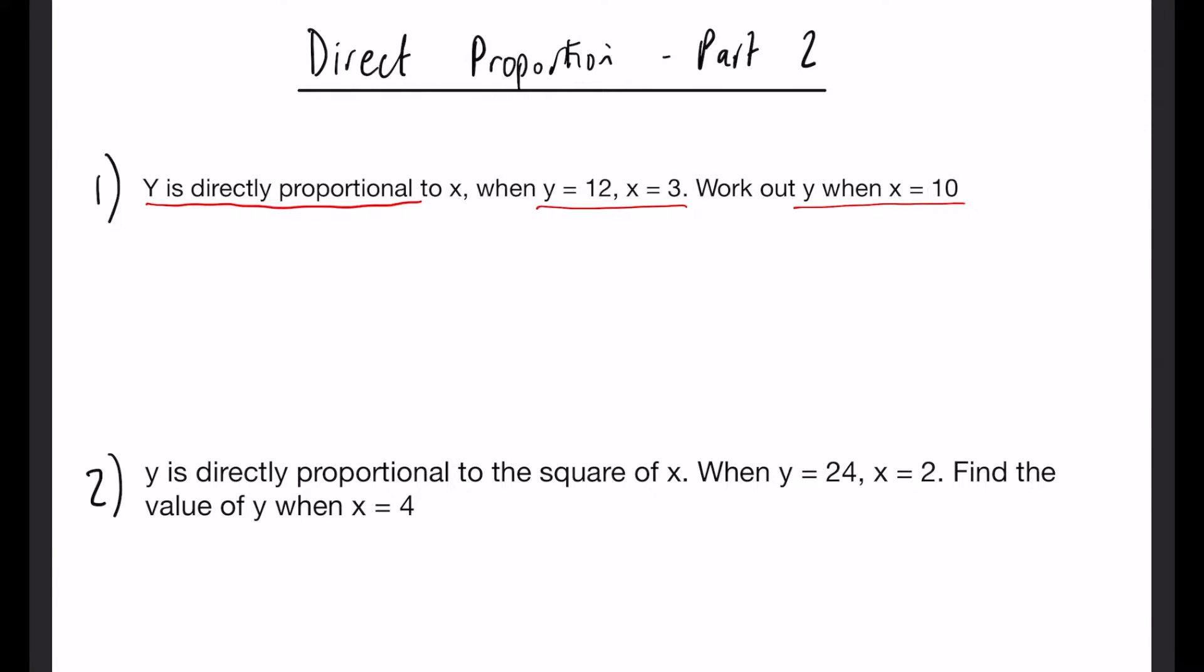So whenever you see a question like this the way we want to write it is we would say y is directly proportional to x. So this little symbol in between represents proportional to. Now once you've written that we want to write it in terms of an equation and we factor out the proportional sign for an equals and we include a scale factor which is k this time.